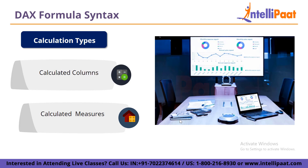Now let us discuss the DAX calculation types. DAX in Power BI has two types of calculations or formulas used to generate a resultant value from the input value. The first one is calculated columns. Calculated columns are used to merge new columns into existing ones with filters. These columns can be created from the modeling tab in Power BI desktop by entering their names and formula. Then we have calculated measures. Measures enable the user to create fields with aggregate values like average, ratio, percentage, etc. Just like calculated columns, measures are created from the modeling tab of Power BI desktop.